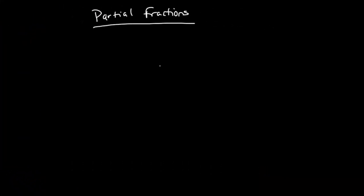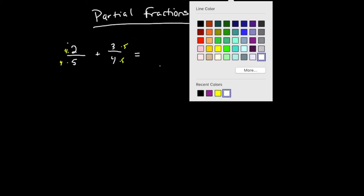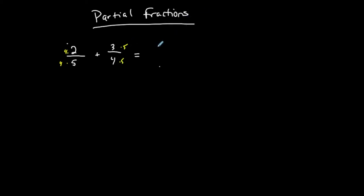Partial fractions. You guys hopefully know how to take, for example, 2 fifths and add 3 fourths, to get a single fraction — combine like terms and such. What we want to do is find the common denominator to create the same fraction and bring them together. So I have 8 twentieths plus 15 twentieths, which gives 23 twentieths.